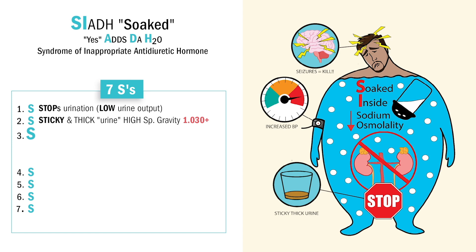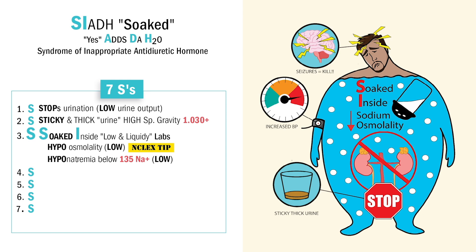Think SI for soaked inside — basically swollen inside. We get really low liquidy lab values, with key words here: hypo or low serum osmolality, and hyponatremia or low sodium. Always huge NCLEX favorites. The NCLEX is going to try and trick you, so think soaked inside, low liquidy labs — decreased blood serum osmolality and decreased sodium below 135.